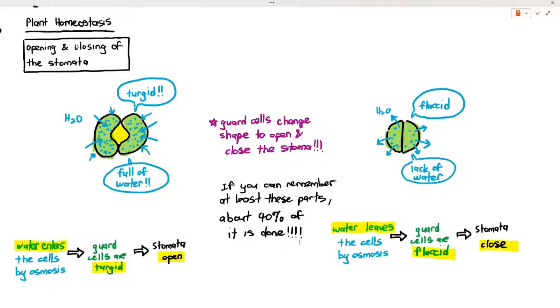For example, when the guard cells are turgid or full of water, it causes the guard cells to swell which causes the stoma to open. Conversely, if the guard cells are flaccid lacking in water, the guard cells will shrink causing the stoma to close.